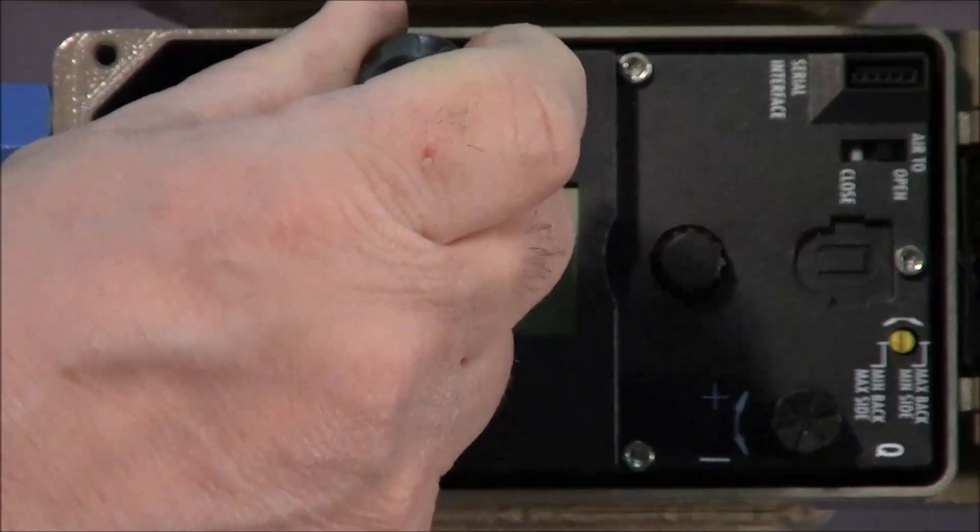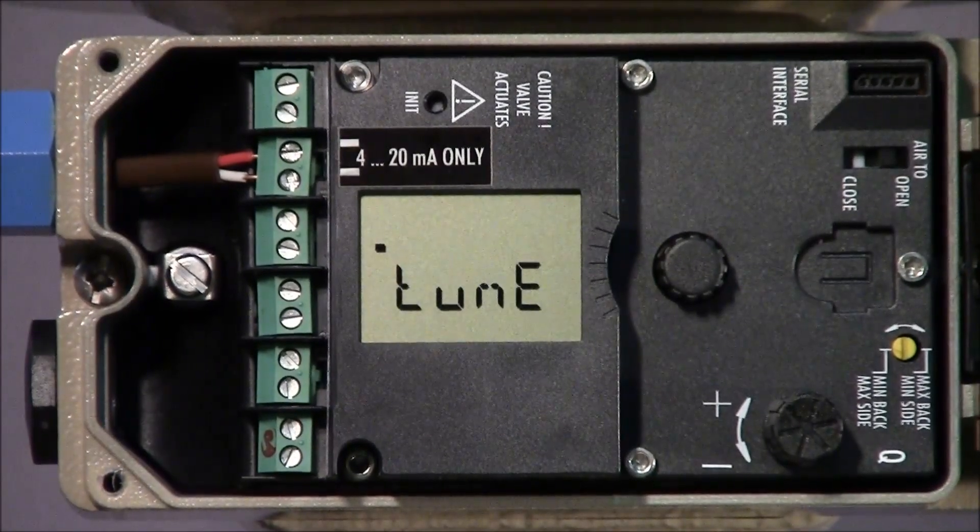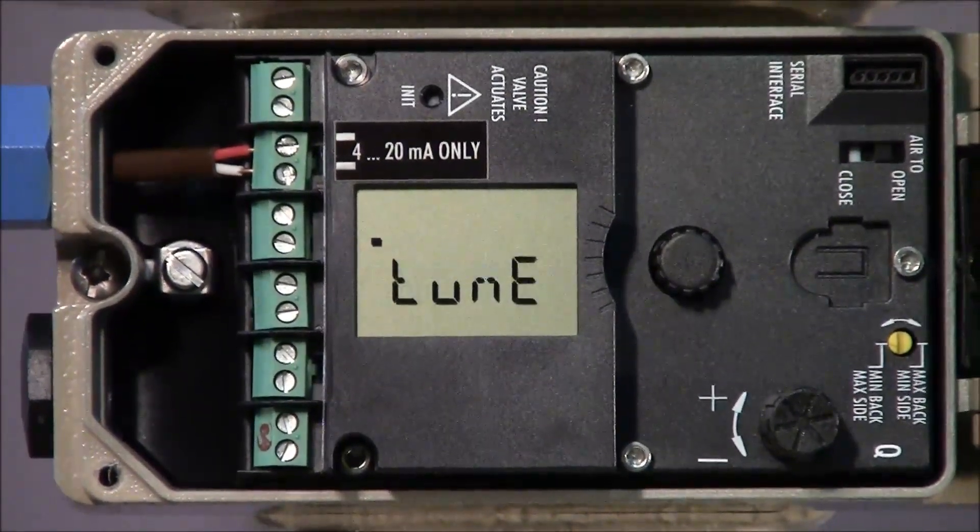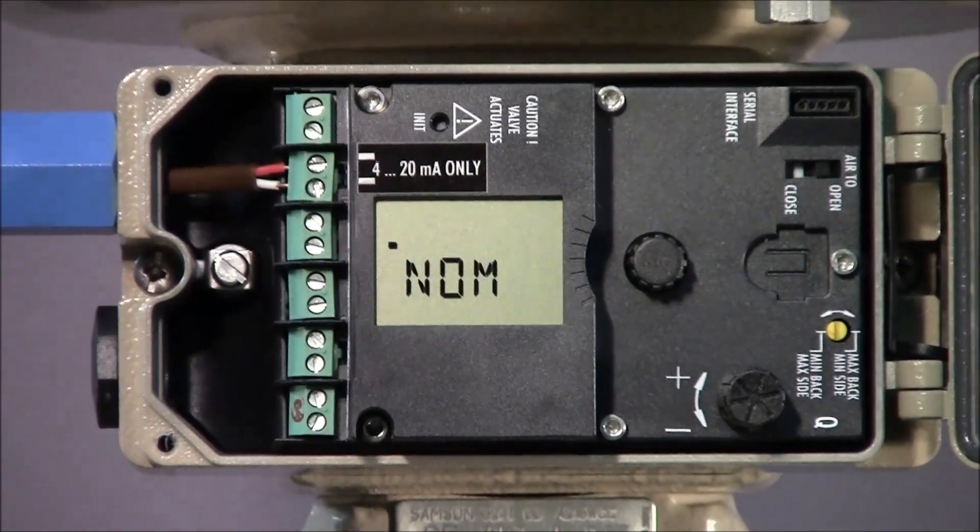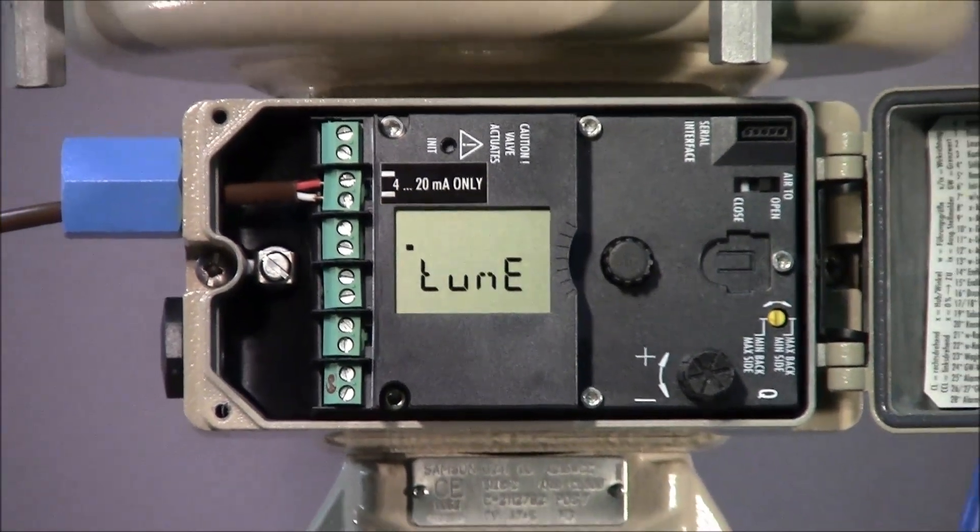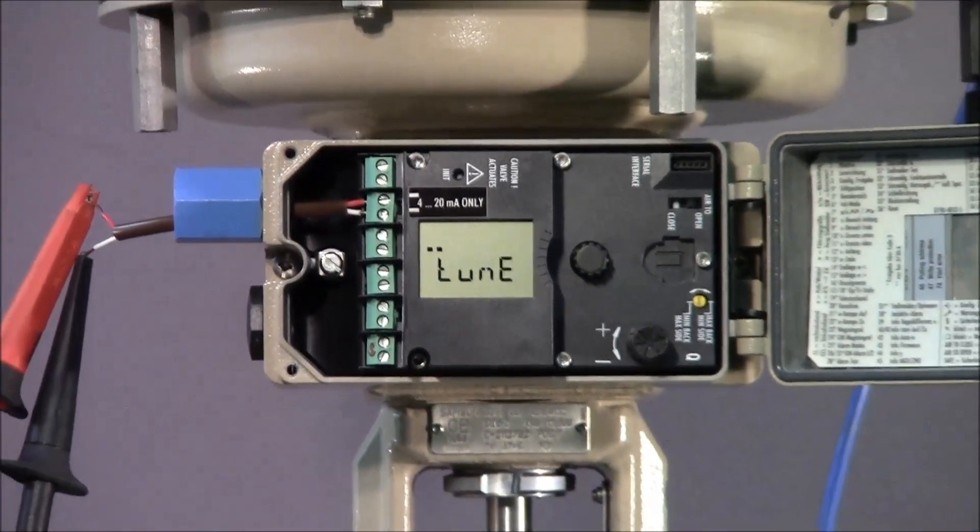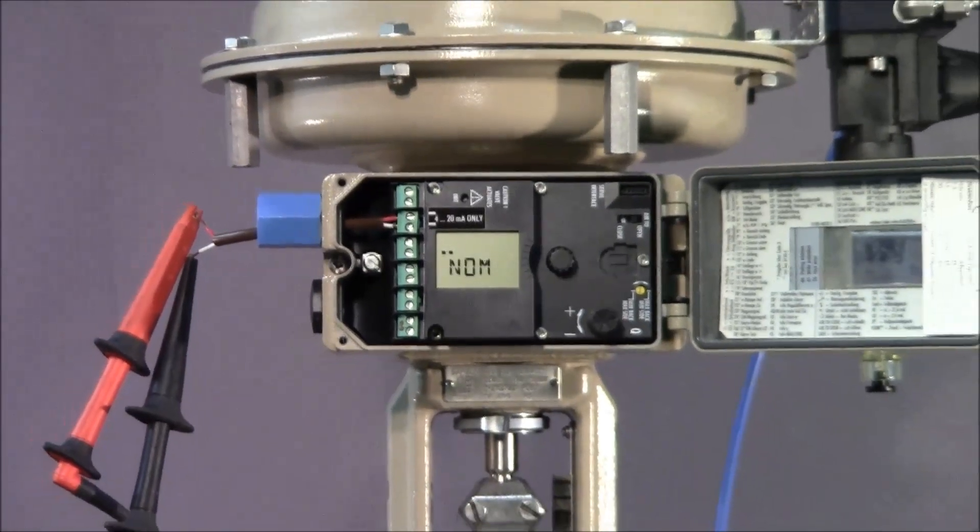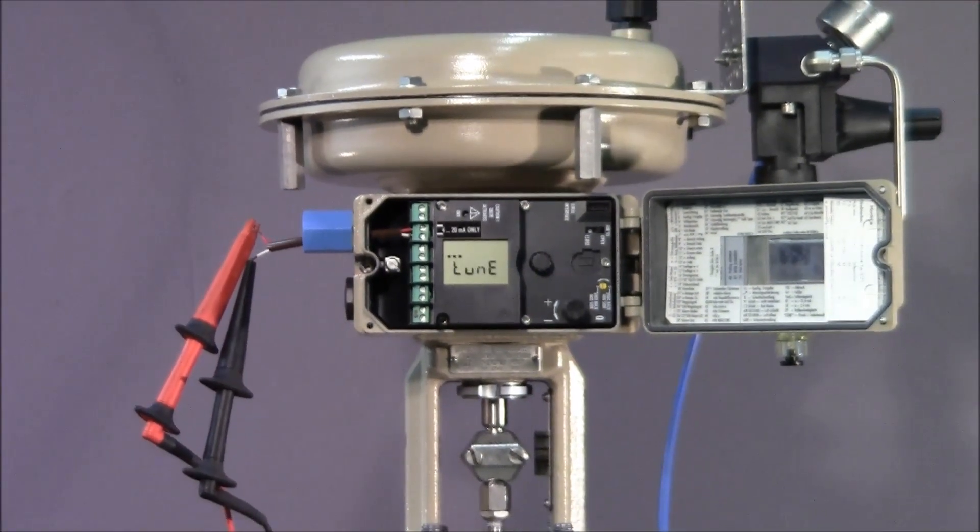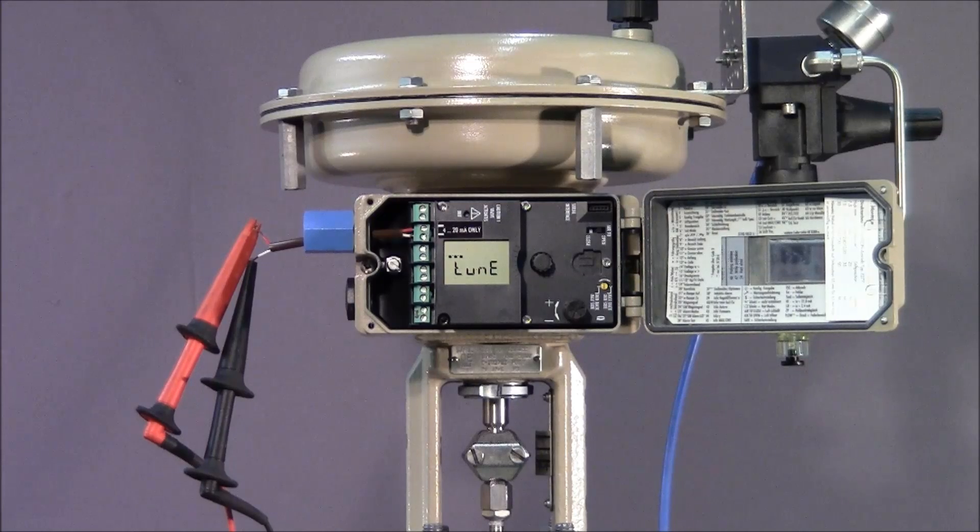We now go back to parameter 0 and press the recessed initialization button to begin the auto calibration process. This process can take a few minutes while the positioner adapts itself to the specific valve and its operating characteristics. It is important not to disturb or interrupt this process until it's finished.